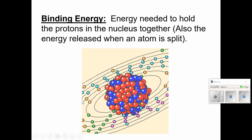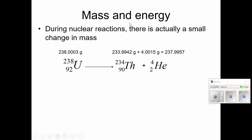The binding energy is the name for this strong force that holds the whole nucleus together. So it's also the name for the energy released when the atom is split. During nuclear reactions, even though we always talk about law of conservation of mass in regular chemistry, in nuclear chemistry there's actually a change in mass. So you can see here, this uranium is 238.0003 grams. And if you add the results of the products, it actually adds to less than the mass that it started with. How can that be?